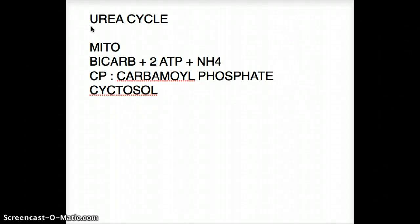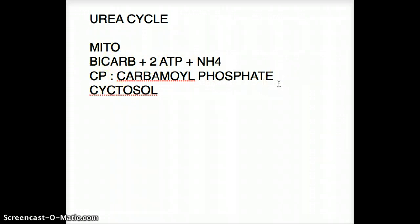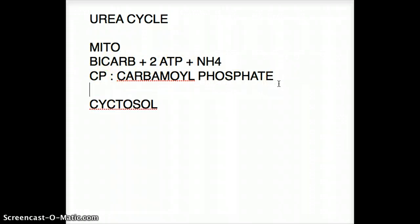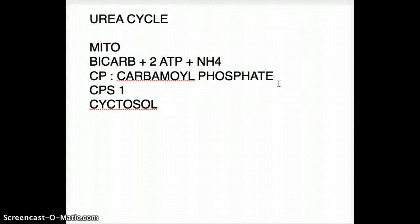This conversion from bicarbonate, 2 ATP, and ammonia to carbamyl phosphate takes place with the help of an enzyme called CPS1, or carbamyl phosphate synthetase 1. It's simple in the sense that the synthetase is forming carbamyl phosphate.